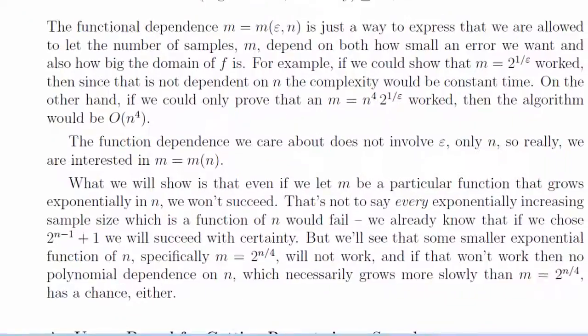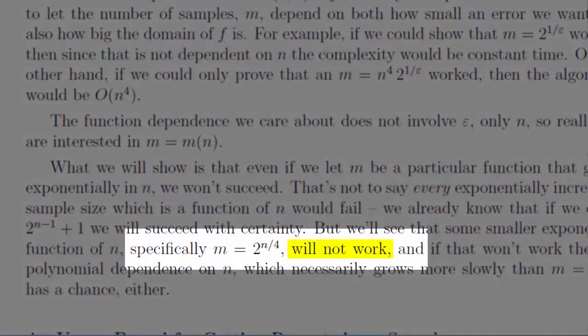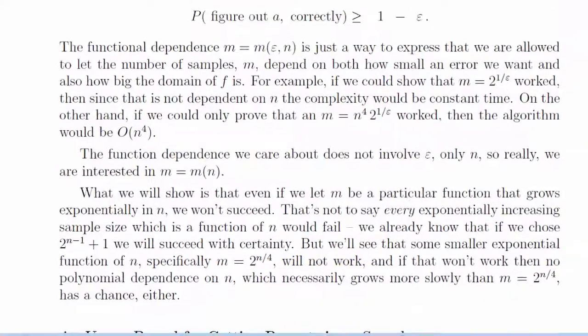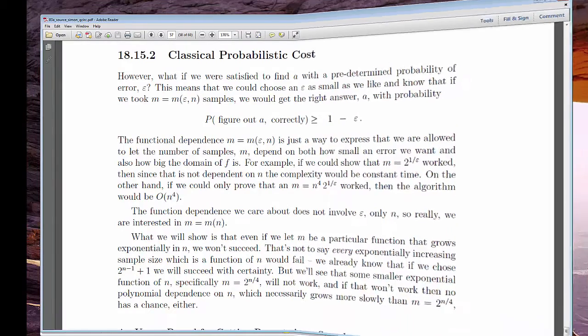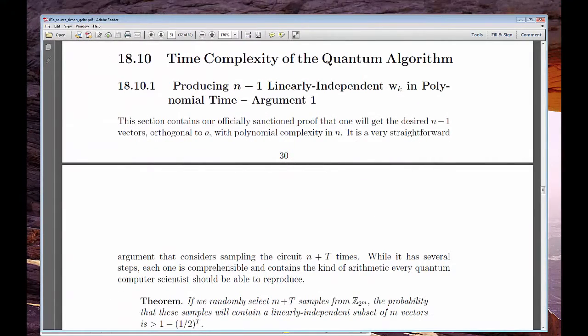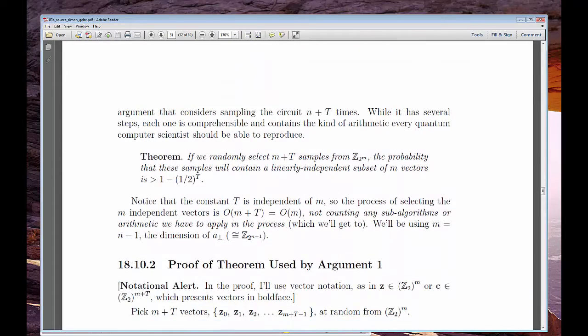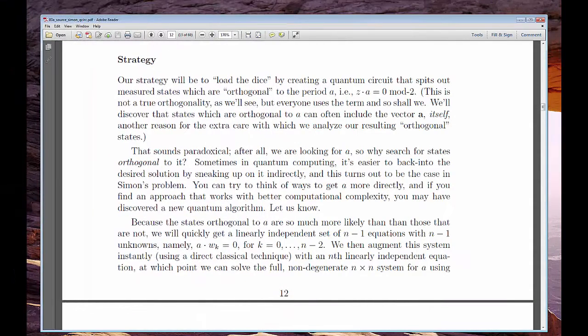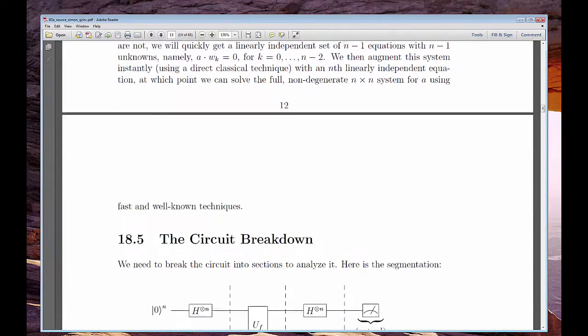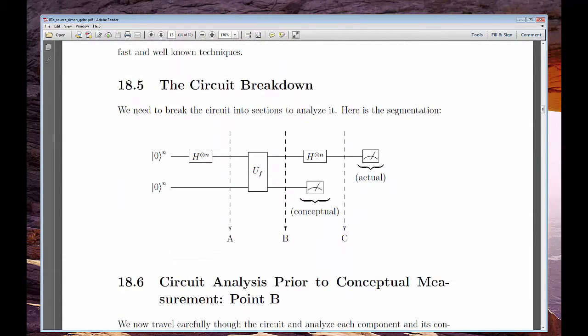Settling most periodicity issues is a hard problem for classical computers. Those solutions tend to have an exponential big O. Simon's algorithm solves a particular periodicity problem and does it polynomial fast. And more importantly, it provides a blueprint for the solution to universally applicable and naturally occurring periodicity questions.